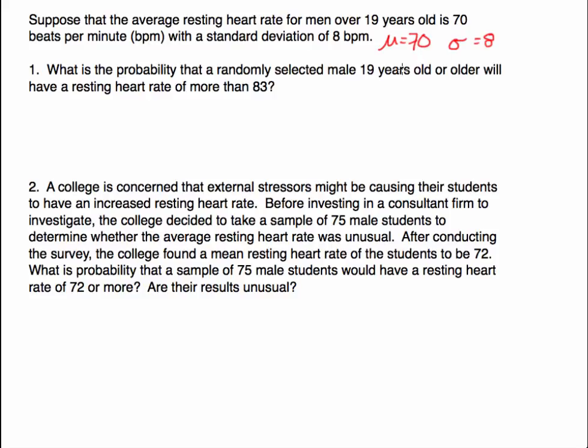I am first asked to calculate the probability that a randomly selected male 19 years or older will have a resting heart rate of more than 83 beats per minute. When I read this, I'm looking for the probability for a randomly selected male — I am not looking for a mean or an average. I'm just looking for an observation, a value if I randomly select one individual.